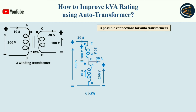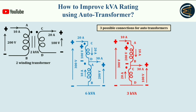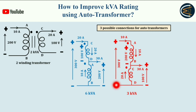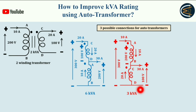This is one possible connection. Now let's see another connection. Here I just interchange the positions of the windings — AB winding is placed differently and CD winding is placed here. Similarly, 300 volts is applied on the primary side, but here the secondary side has 100 volts, and the current rating is also not violated. If you calculate, you will get 3 KVA.